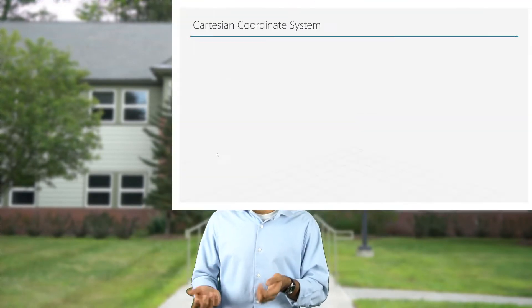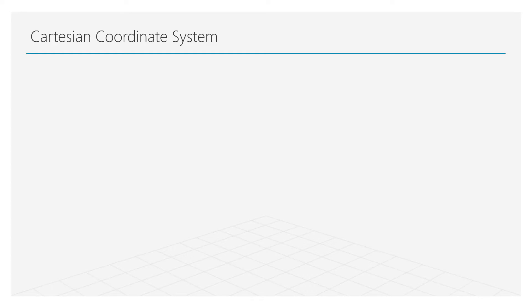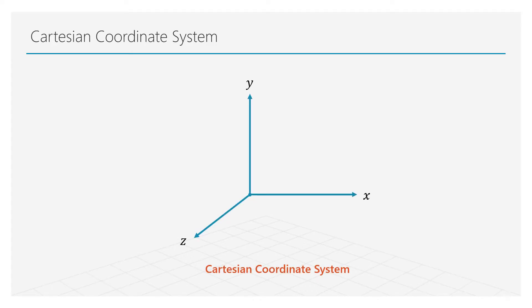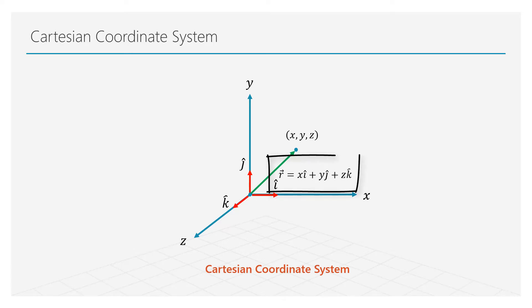To do this, we have to first fix a certain spatial coordinate system. The first and the simplest one is the Cartesian coordinate system. In this system, we use three axes x, y, and z to define points in space. These coordinate axes have the following unit vector directions in the x, y, and z directions respectively. A vector r can be used to define a point x, y, z in space. r is referred to as the position vector.